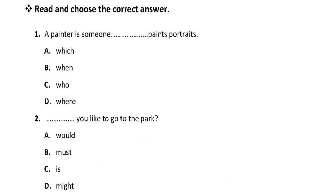Now let's move to the grammar section — read and choose the correct answer. Number one: 'A painter is someone ___ paints.' We use 'which' with things or animals, 'when' with time, 'who' with people, and 'where' with places. Here the painter is a person, so we use 'who.' Number two: '___ you like to go to the park?' The suitable answer is 'Would' — 'Would you like to go to the park?'